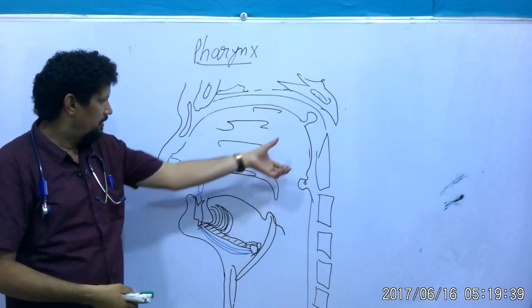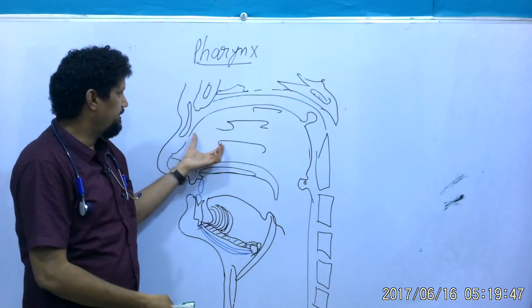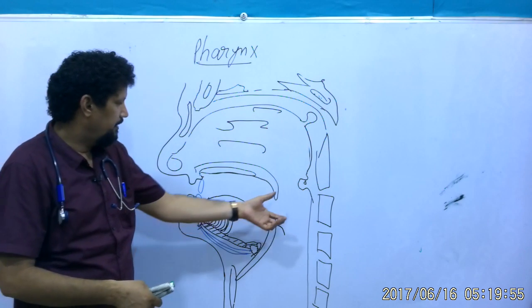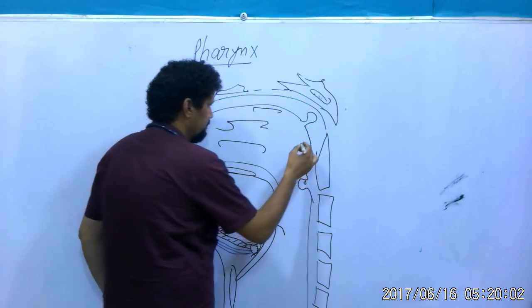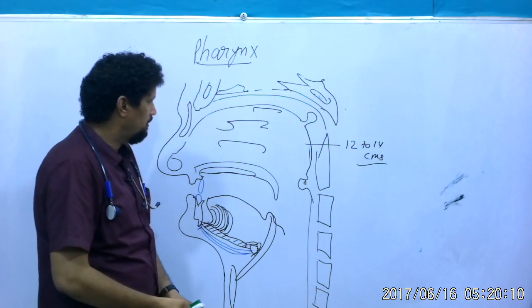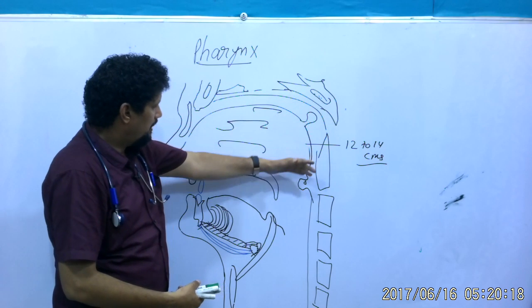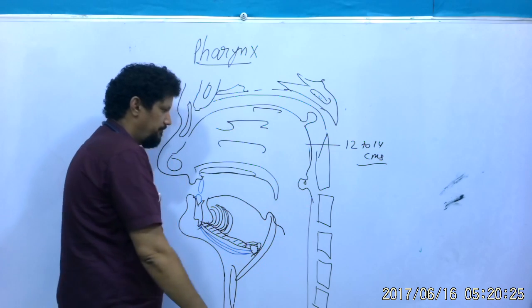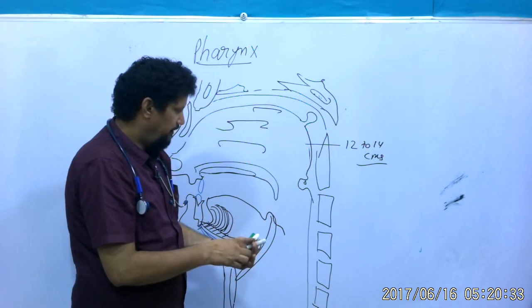This musculomembranous tube situated behind the nasal cavity — this part of the pharynx is known as the nasopharynx. The total length of the pharynx is 12 to 14 centimeters. The part extending from the base of the skull up to the level of the palate is the nasopharynx, and this passage entrance is known as the pharyngeal isthmus.